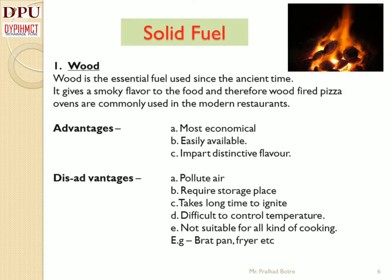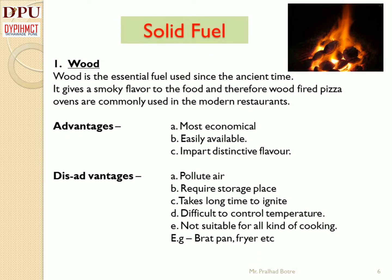Under solid fuels, the first one is wood. Wood is the essential fuel used since ancient times. The primitive man started using wood to cook his food, and nowadays it is used in the hotel industry. Wood is used as a fuel for wood-fired pizza ovens, which gives a smoky flavor to the food. Therefore, wood-fired pizza ovens are most commonly used in modern restaurants.